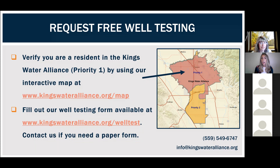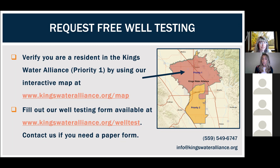If you know you likely have a nitrate issue, or even if you're unsure and want to find out, now is the time to take advantage of this program. First, verify that you are a resident in the Kings Water Alliance priority one area by using our interactive map at kingswateralliance.org/map — you can type your address in and it will let you know where your home lands. To receive bottled water, we need confirmation that your well has unsafe levels of nitrates. We are offering free well testing to eligible residents in the priority one area. To take advantage of that, fill out the well test and bottled water form available on our website at kingswateralliance.org/welltest. The form is available in both English and Spanish. Once you fill it out, we will follow up with you to schedule a well test or initiate bottled water delivery.